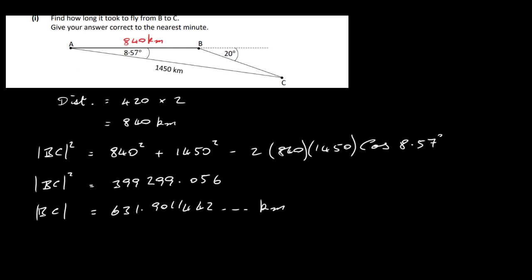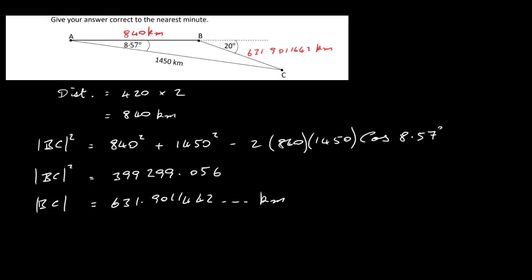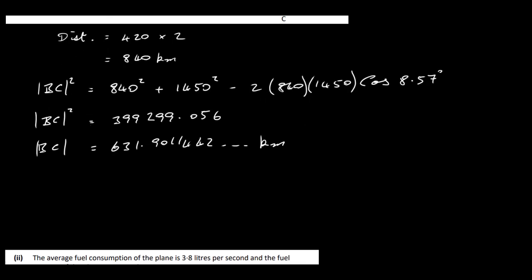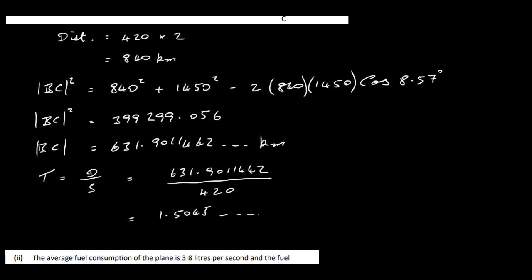We now have the distance from B to C as 631.9011 kilometers. To find how long it took to fly from B to C, we use time equals distance over speed. Our distance is 631.9011 km and the speed is 420 km/h. Doing that on the calculator gives 1.5045 hours.